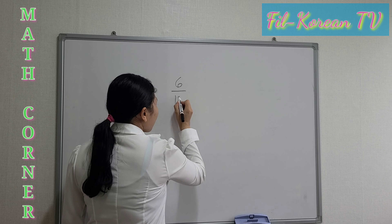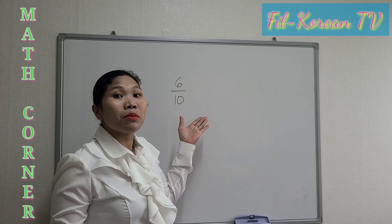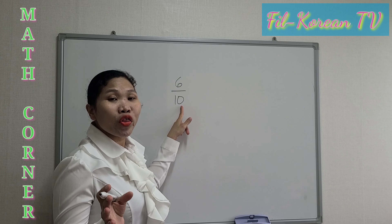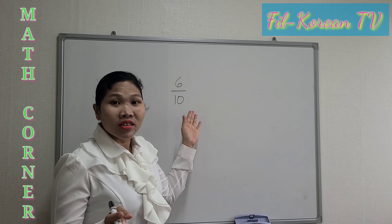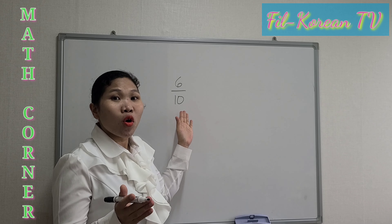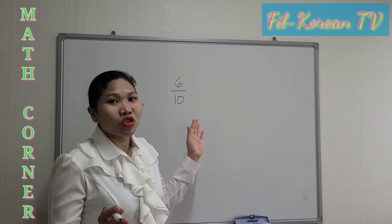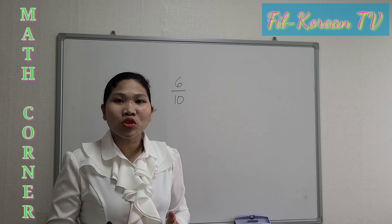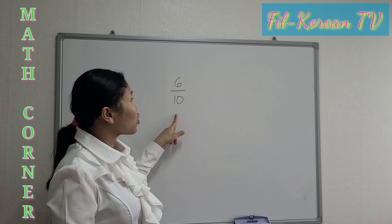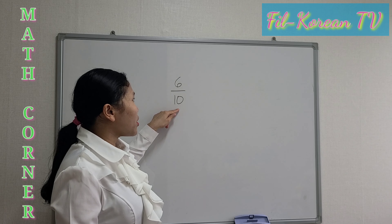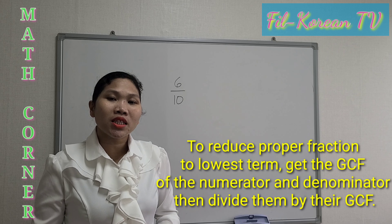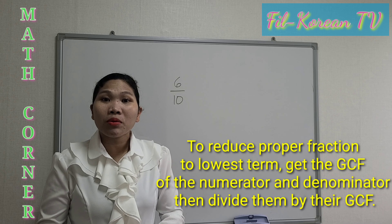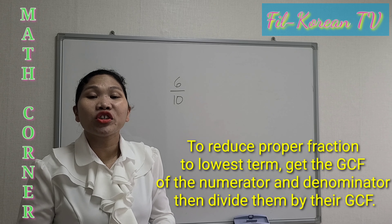6 tenths. It is a fraction not in simplest form. The numerator and the denominator are both composite numbers and they have a common factor, so that means we can reduce this to lowest terms. For a proper fraction like 6 tenths, where the numerator is less than the denominator, we will just get the GCF, or greatest common factor, of the numerator and the denominator, and divide both by the GCF.